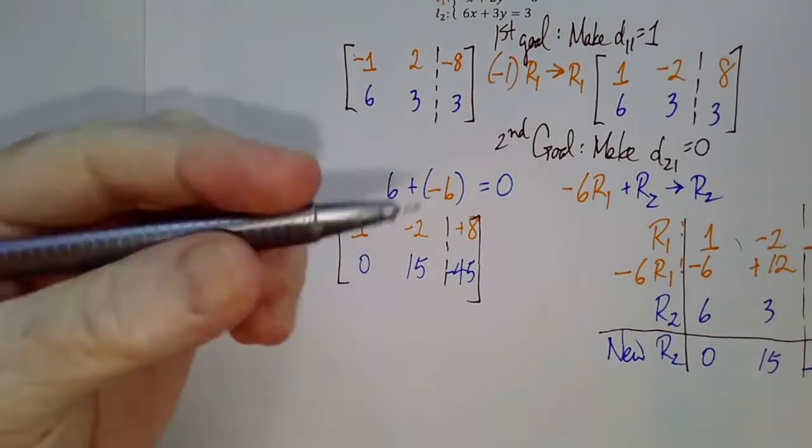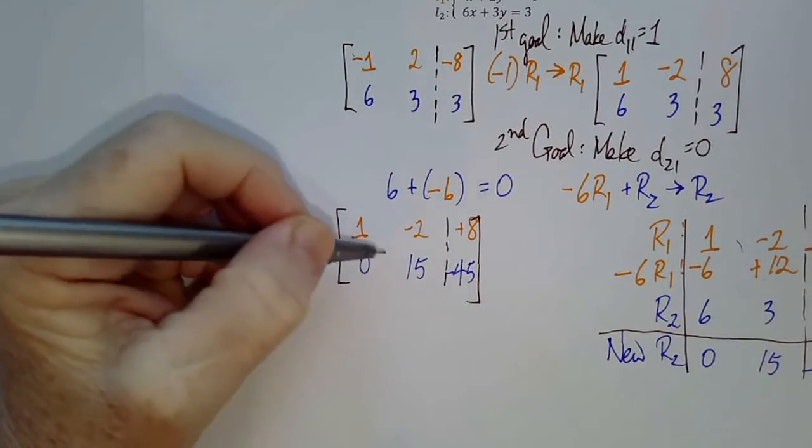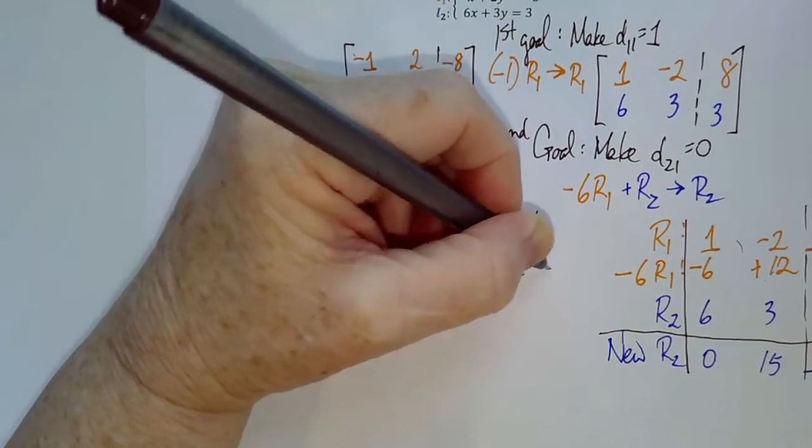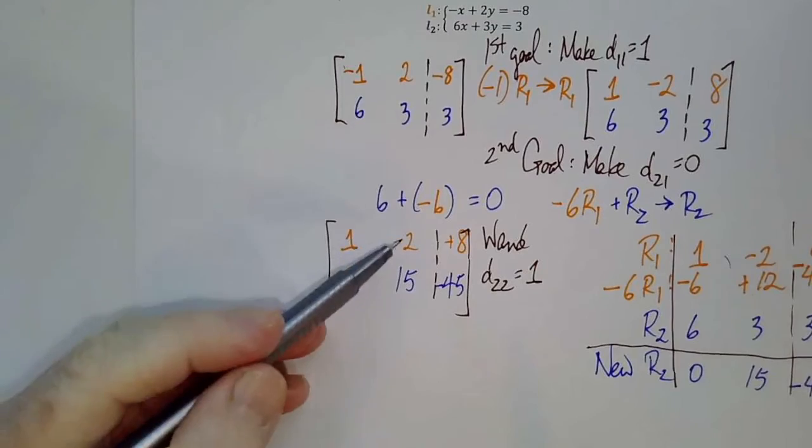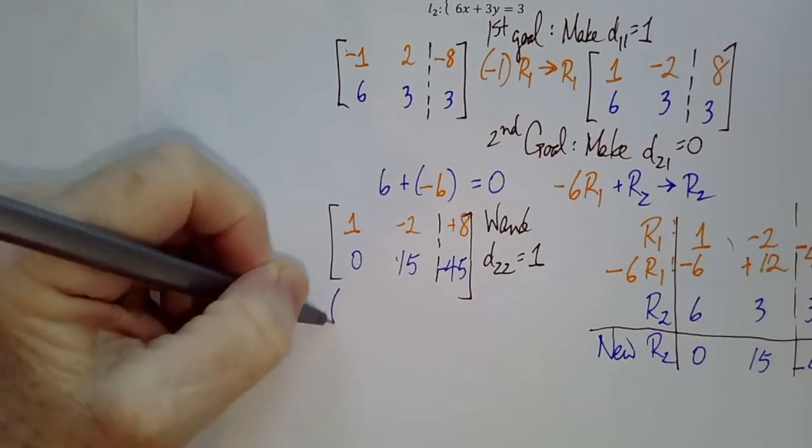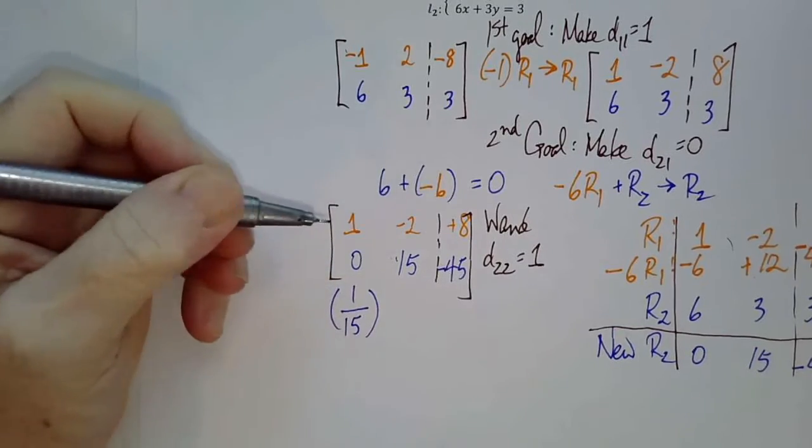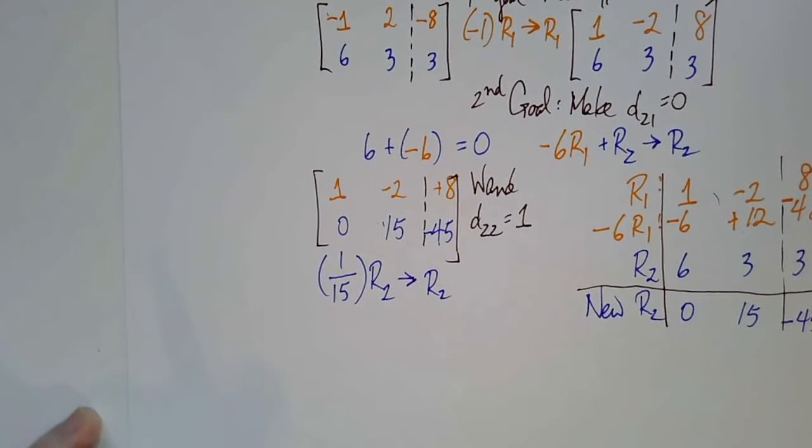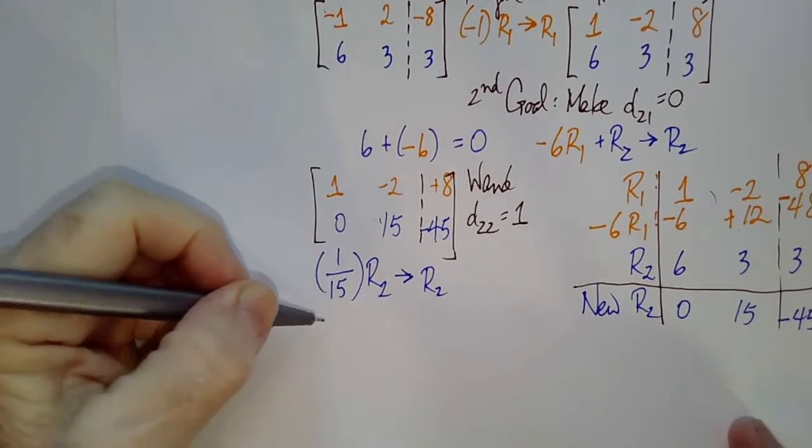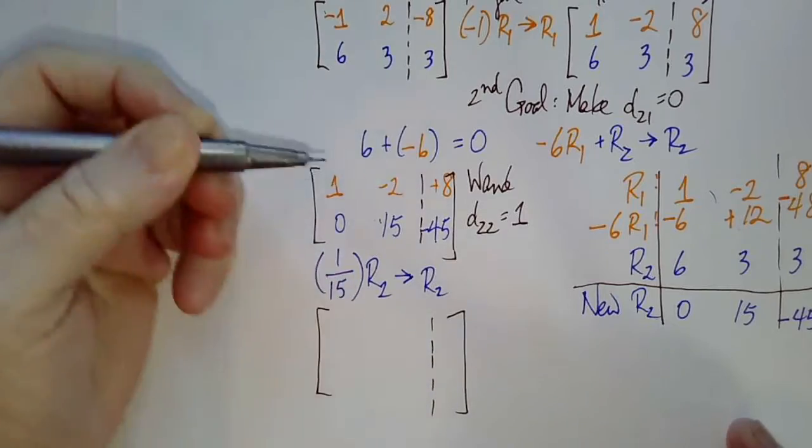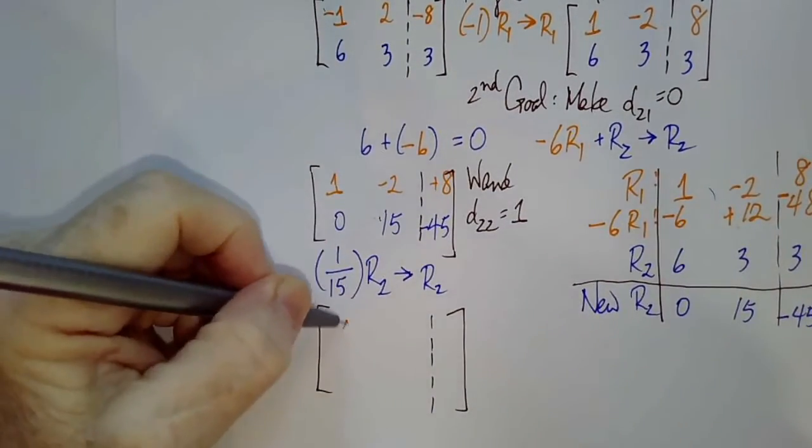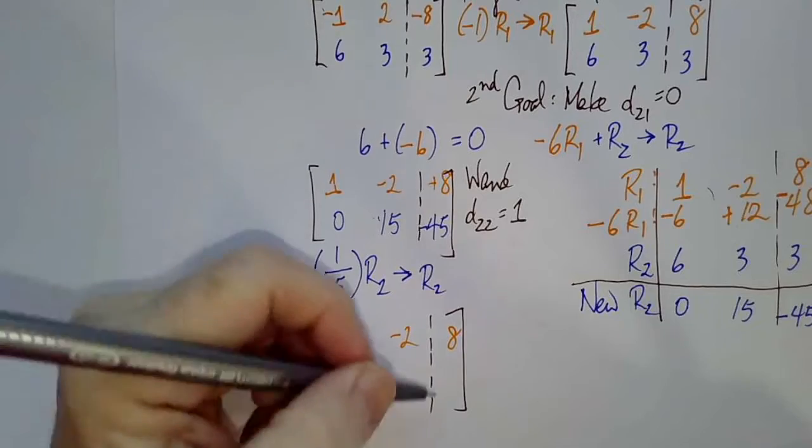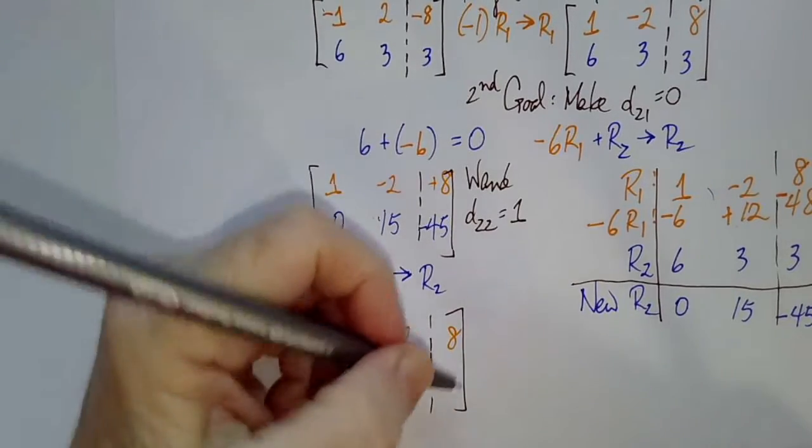The third goal is always to make the next element on the diagonal equal to 1. So we want d22 to equal 1. Well, since d22 is currently 15, we're going to multiply everything in row 2 by 1 over 15, the reciprocal of 15. We still have 1, negative 2, 8 in row 1, and now we have 0, 15 divided by 15 is 1, negative 45 divided by 15 is negative 3.